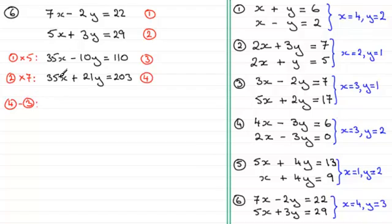So if we do four take away three, 35x minus 35x is zero. And when it comes to working out the y terms, we've got plus 21y. And then we are subtracting the other y term, which is minus 10y. So we've got two minuses here, replace them with a plus, 21y plus 10y is going to be equal to 31y.